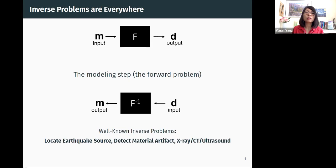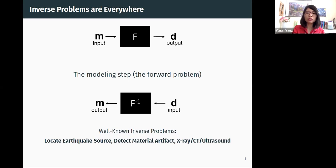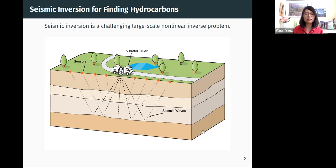The particular inverse problem I center around today is related to the wave equation — specifically doing, quote, 'ultrasound' to part of the earth, which is the seismic inverse problem. The mechanisms are very similar to other wave-based inversion for material, body, or medical imaging. The problem setup: we want to know what's underneath the ground, and we create our own wave source using a vibrator truck.